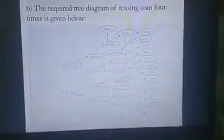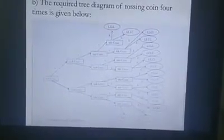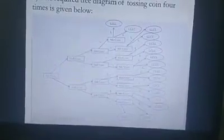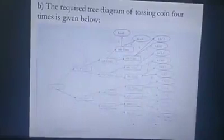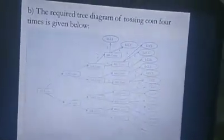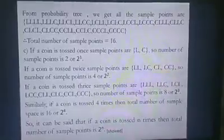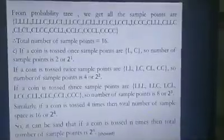For question (b), we have to draw a probability tree diagram for tossing the coin four times. The first coin gives L and C; for each of those outcomes the second coin again gives L and C, continuing this pattern for all four tosses. From this diagram you can easily see that there are 16 total possible outcomes. The sample points are LLLL, CLLC, LCCL, and so on — all 16 combinations are listed from the probability diagram.